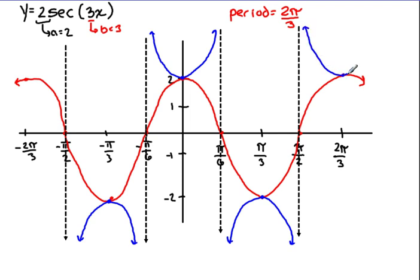And this is basically all we need to get our sketch of our cosine and our secant function, with a period of 2π over 3 and an amplitude of 2.